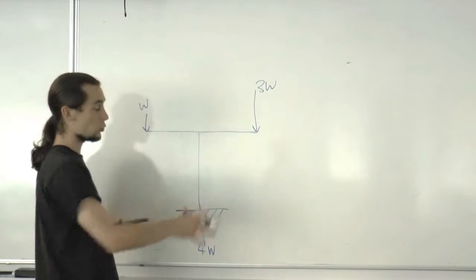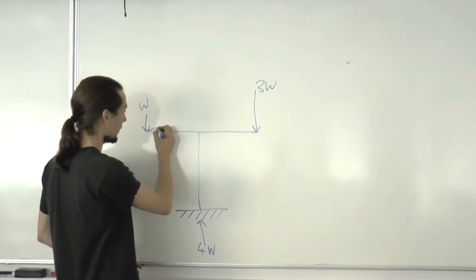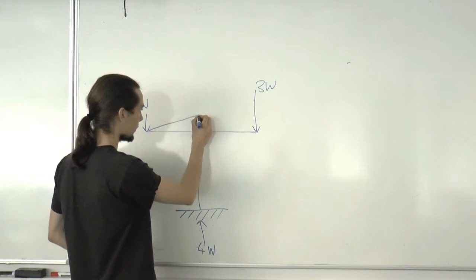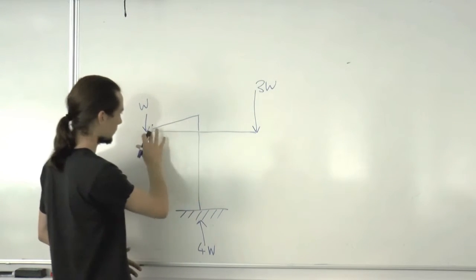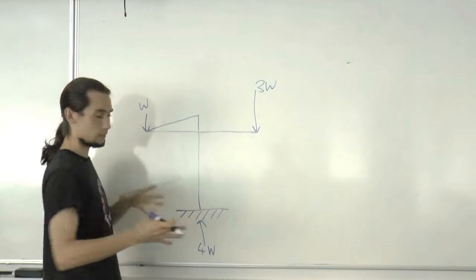As we move away from each support, there's going to be a linear increase in the bending moment diagram, tension on the top by convention, and obviously there's going to be tension on the top here.